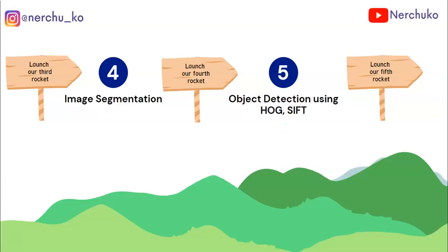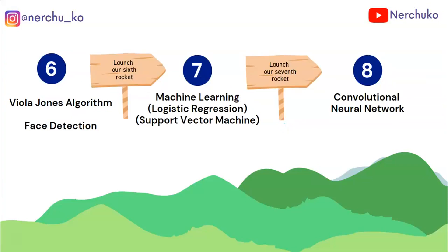Now we will start with convolutional neural networks. Let's also talk about image segmentation. One of the famous algorithms is the Viola-Jones algorithm, which is used for face detection. This is based on the Viola-Jones algorithm.